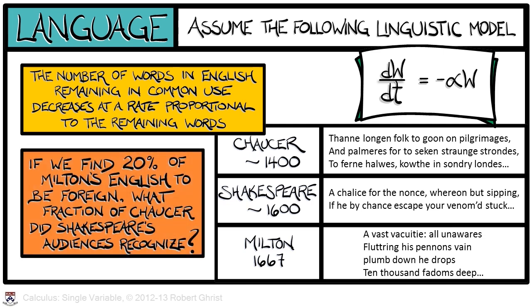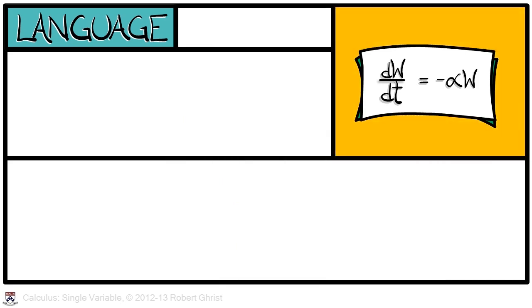That means that words fall out of use. But this model states that words fall out of use according to a linear differential equation, where w is the amount of words remaining in usage and alpha is a decay constant. Assuming this model, let's answer the following question. If we find 20% of the words in Milton's poem to be unusual, then what fraction of Chaucer's poetry did Shakespeare's audience recognize? That sounds difficult. What can we do with that?